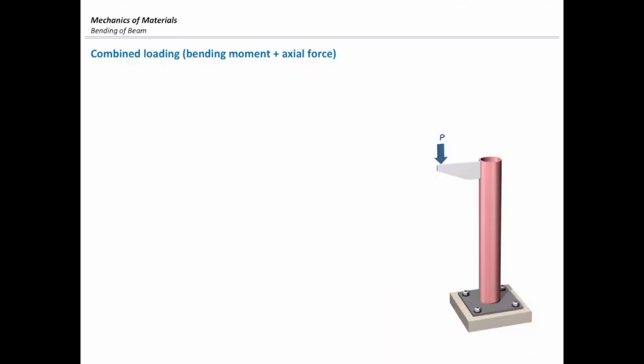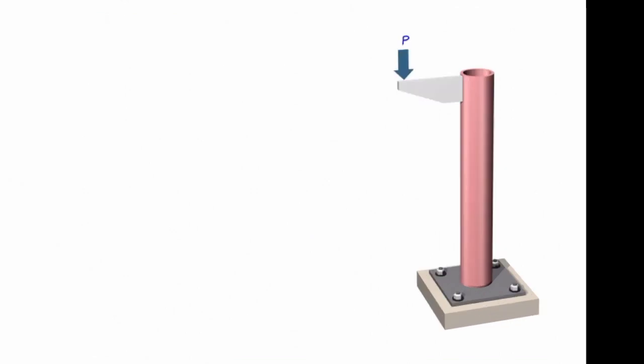Look at this figure — this column, which is subjected to just axial force. This column looks like an axially loaded element, but in addition to that axial force, there will be one extra moment. We call that the eccentric moment. The distance of that force from the center of that section is E, which is what we call eccentricity — that is, the distance from the centroid.